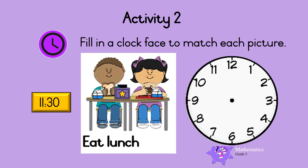What about this one? At half past eleven, it is time to eat lunch. Let's show this time on the analog clock. The hour hand should point exactly between 11 and 12, because the time is between 11 o'clock and 12 o'clock. And the minute hand should point to six, which shows 30 minutes.